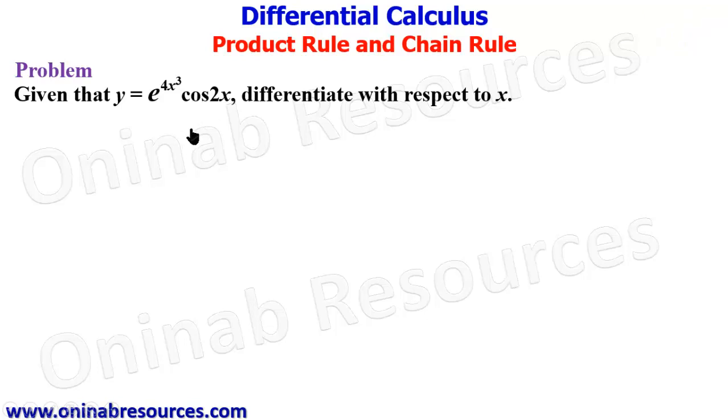So we are going to apply product rule, and within the product rule will be applying chain rule. Because this is chain rule here, this is chain rule here. The fact that we have cos 2x and not cos x is chain rule, and also e power 4x³ indicates that we are going to apply chain rule.